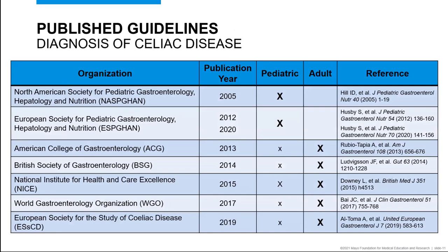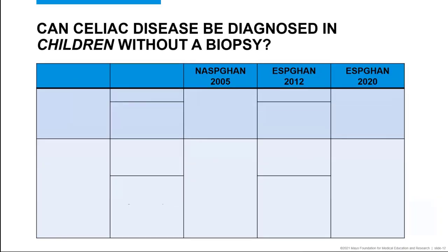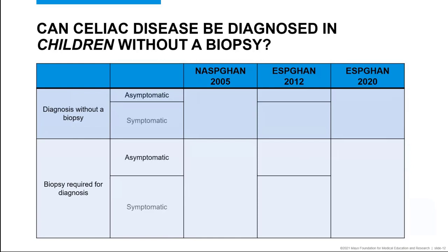Lastly, we come to the most controversial point of celiac disease diagnostics, and this is the question of whether a biopsy is needed to make the diagnosis. This question demonstrates clear differences between adult and pediatric groups. To review the guidelines from the North American and European Societies for Pediatric Gastroenterology, Hepatology, and Nutrition and their recommendations on when the diagnosis of celiac disease can be established without a biopsy and when a biopsy is needed, we will also need to distinguish between asymptomatic and symptomatic patients for certain guidelines.